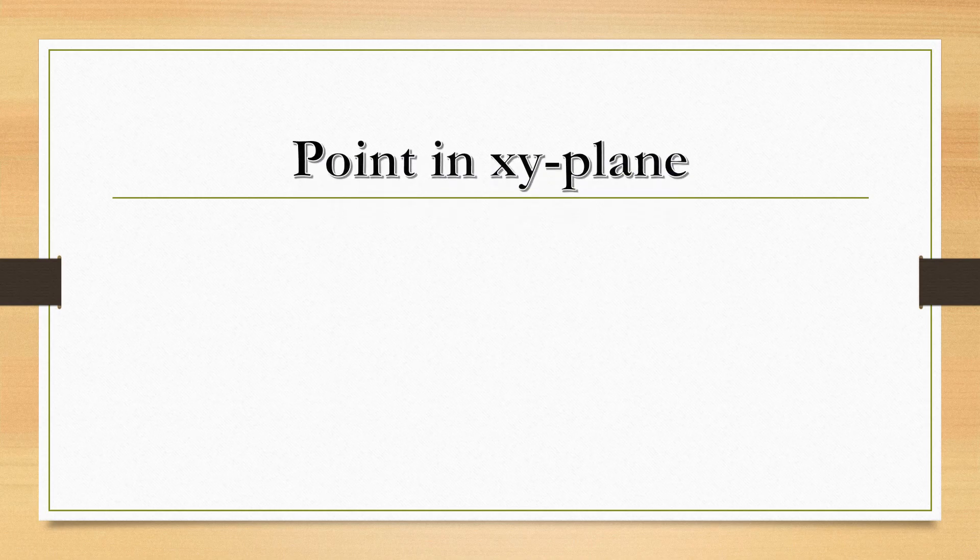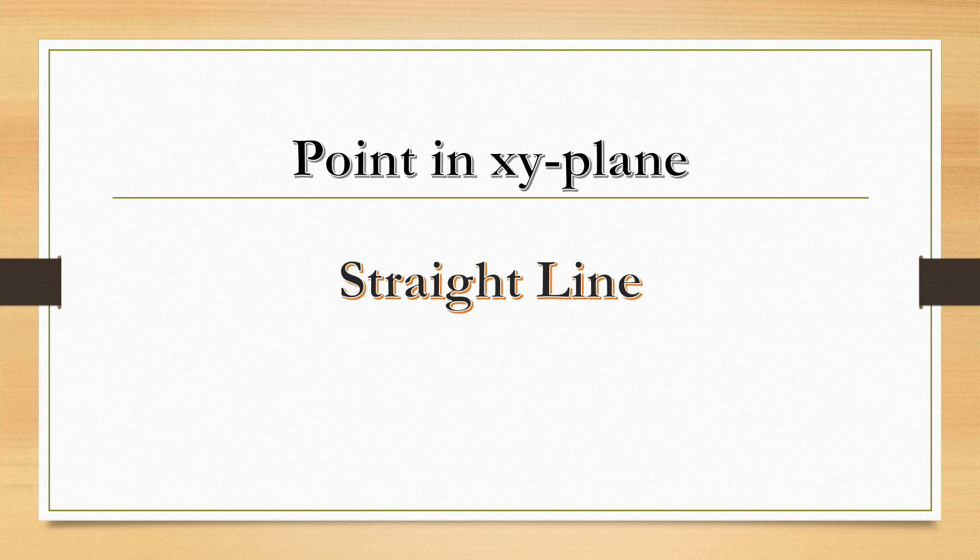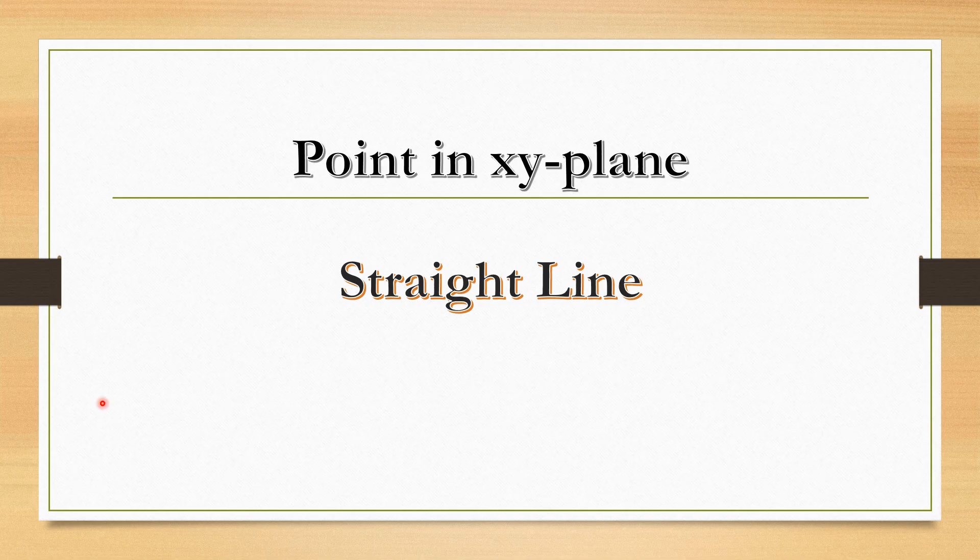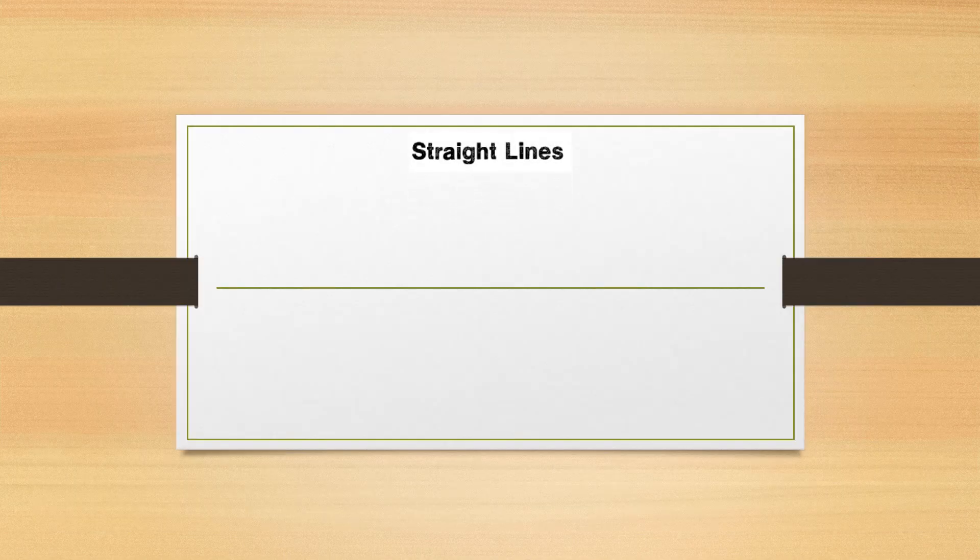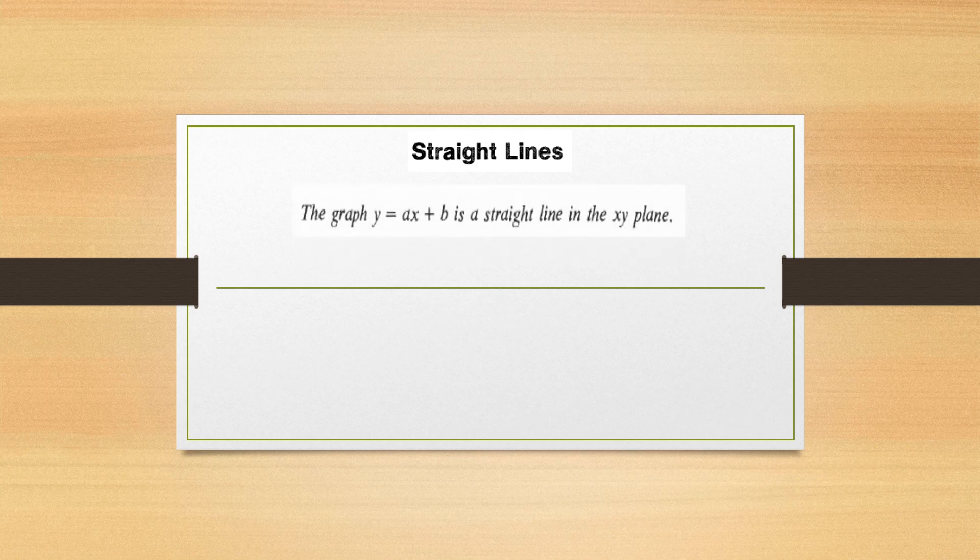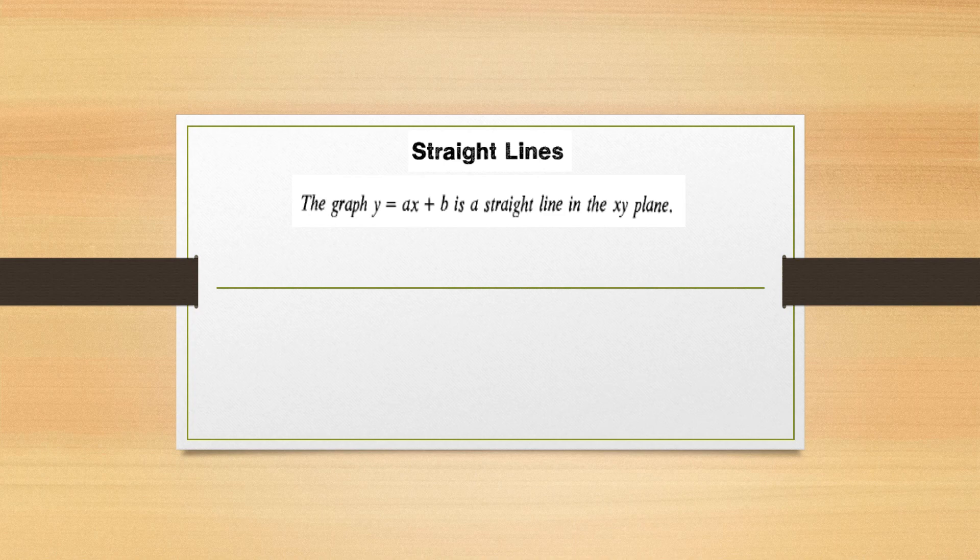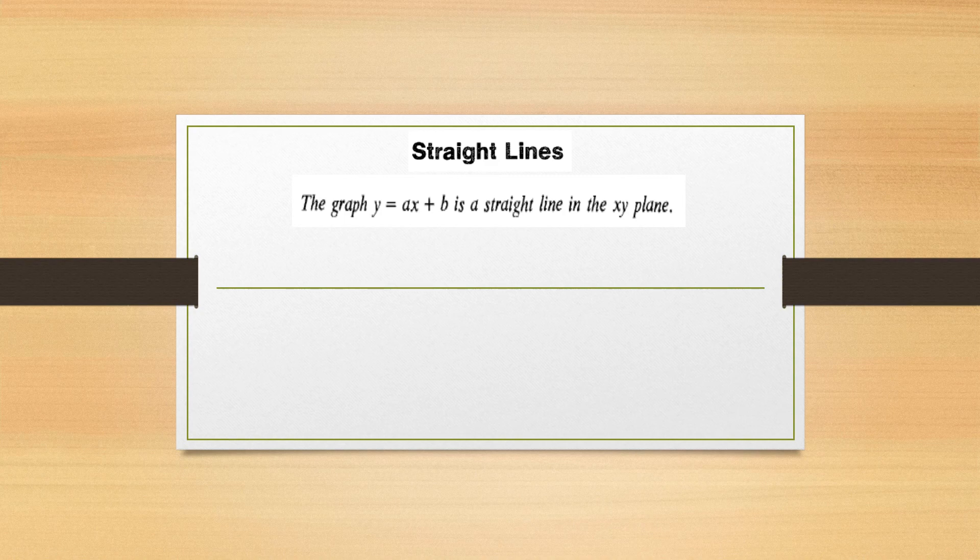Today we will study about the straight line and the point in the x-y plane. The graph of the equation Ax plus b is always a straight line in the x-y plane. This equation is called the linear equation and it is always a straight line.